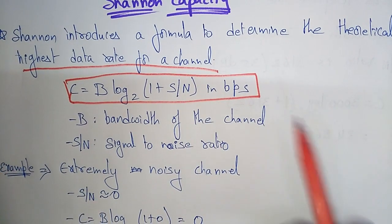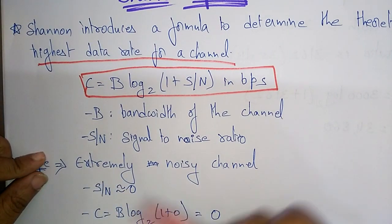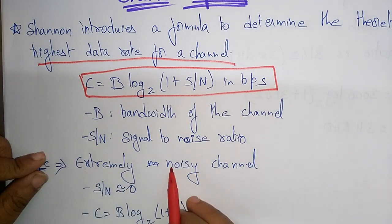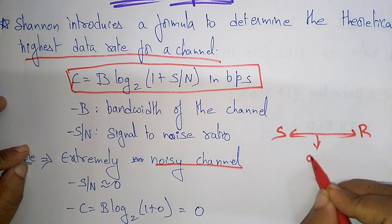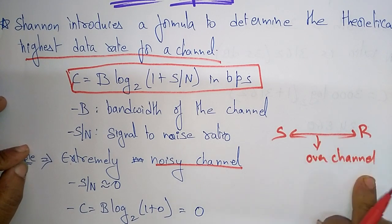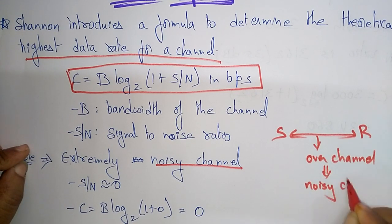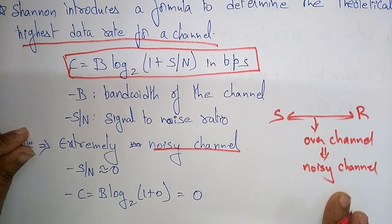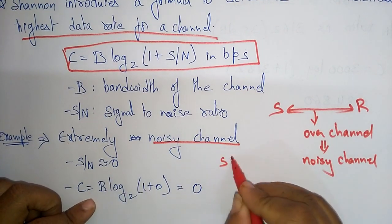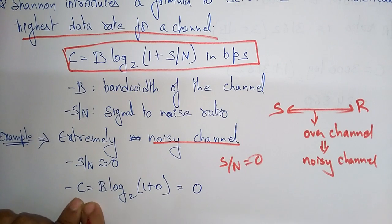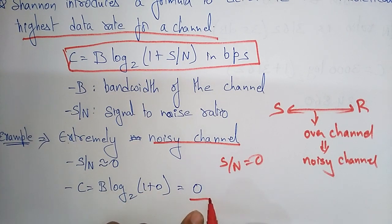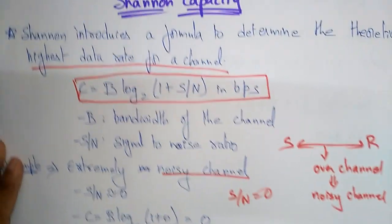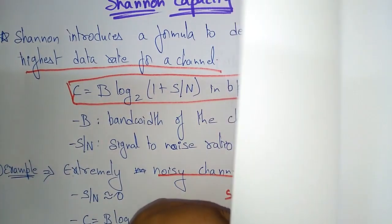Let's take a simple example. Suppose the channel is an extremely noisy channel — from sender to receiver, data is transmitted over this noisy channel. If it is extremely noisy, S/N is almost zero. Substituting into the formula: C = B log₂(1 + 0), which gives a Shannon capacity of zero. So the highest data rate for an extremely noisy channel is zero.